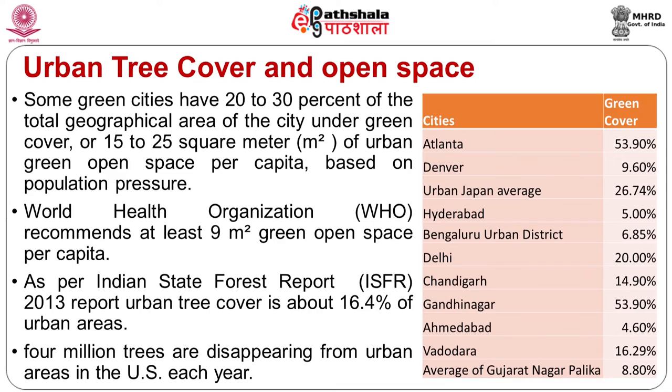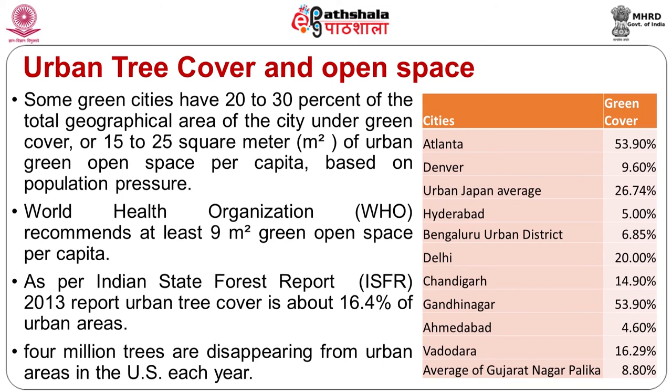Planned cities like Chandigarh and Gandhinagar have higher percentages of green cover than most Indian cities. As per the Indian State Forest Report for 2013, urban tree cover is about 16.4 percent of urban areas on average. Deforestation is happening not just in Indian cities but all over the world — in America, about four million trees are cut in urban areas every year. In the Indian context, for every urban infrastructure project executed — for instance, 17,000 trees were cut to create space for building the Chennai Metro — it has an adverse impact on the city's environment. We will talk about this further when discussing urban forestry and urban agriculture.